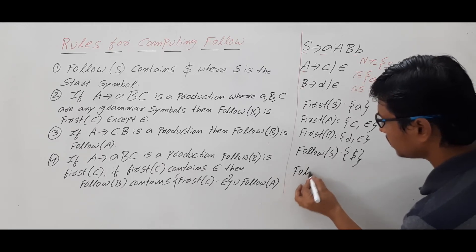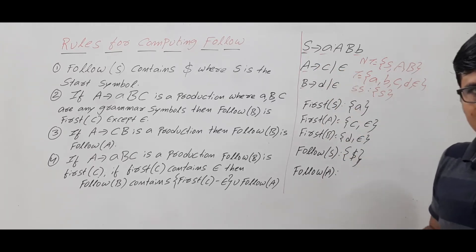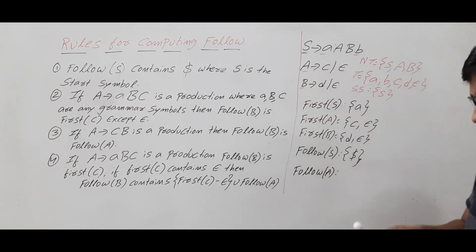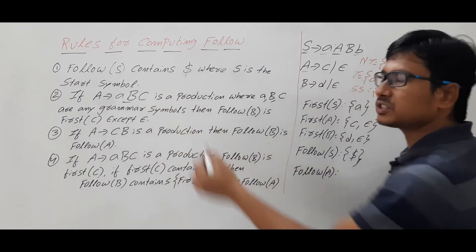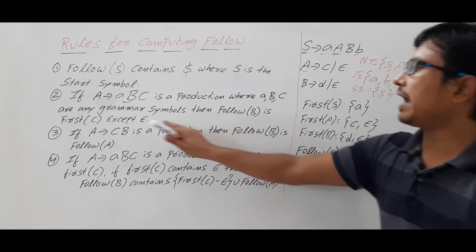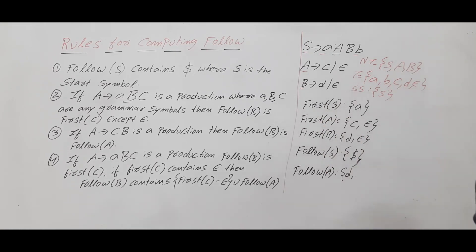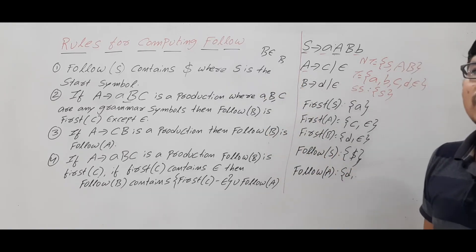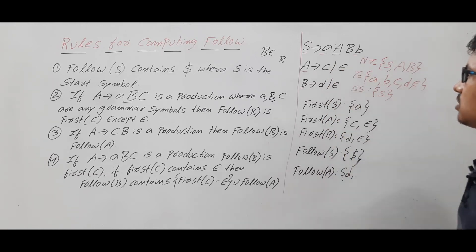FOLLOW of A — A is not the start symbol, so it will not consist of dollar. You need to look at where A appears in the right-hand side. A is in the right-hand side. By the rule: A determines A B C, FOLLOW of B equals FIRST of C. So FOLLOW of A equals FIRST of B, which is D. We exclude epsilon, so we don't consider epsilon. Remember: FOLLOW of any non-terminal will never consist of epsilon.